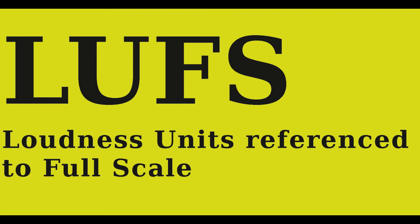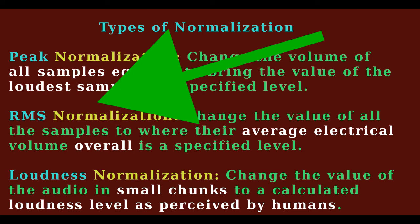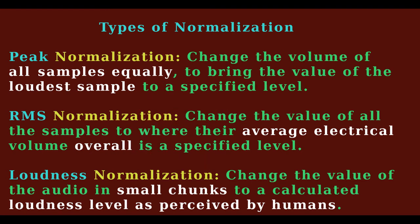Usually, the LUFS and RMS values of a PCM audio file will be very close to each other, but rarely exact because they are measuring different things in the same file. However, you can loudness normalize to a LUFS level, and the result usually meets RMS level targets, while at the same time having the file sound to be the proper level in human perception. It's a win-win.